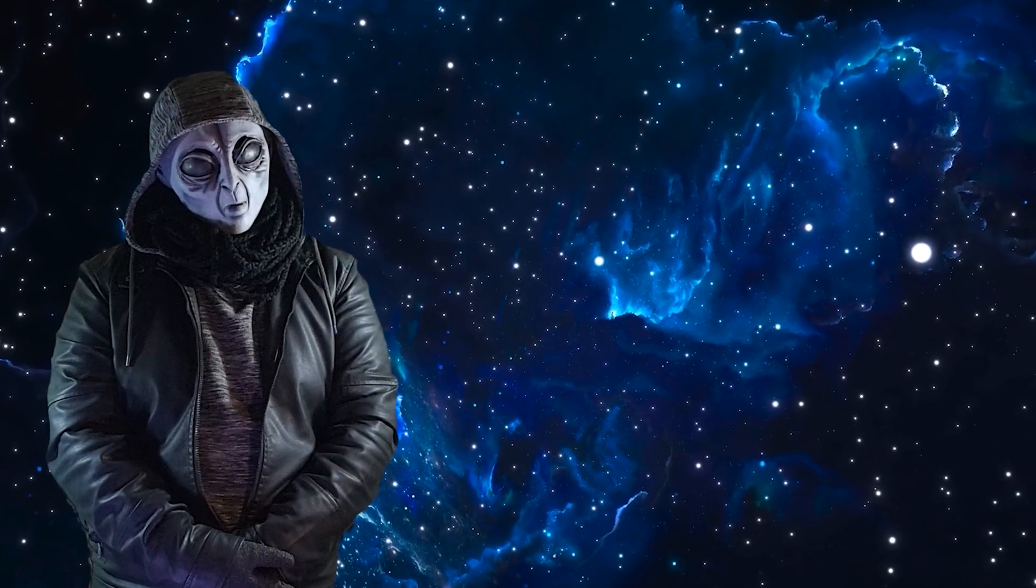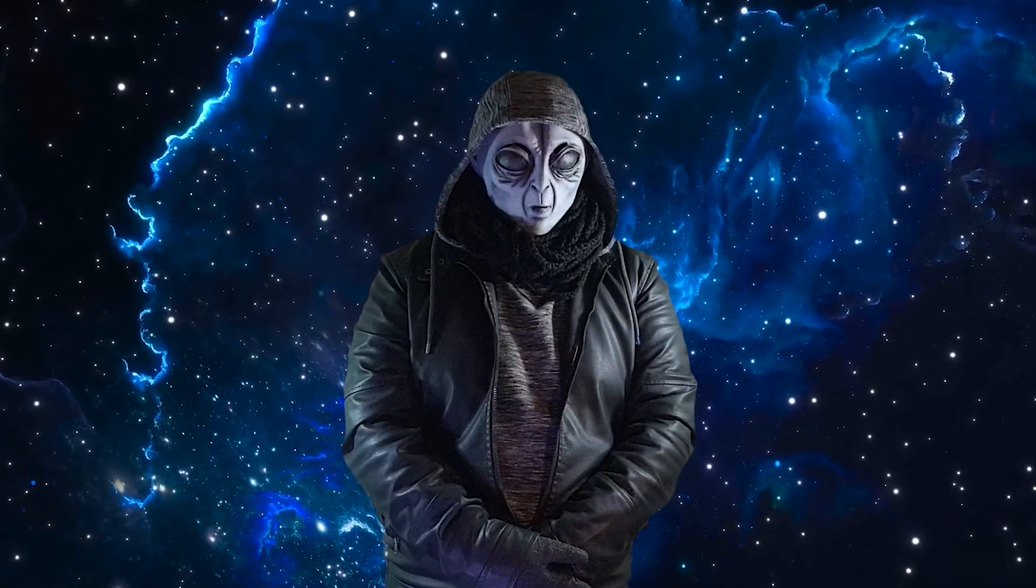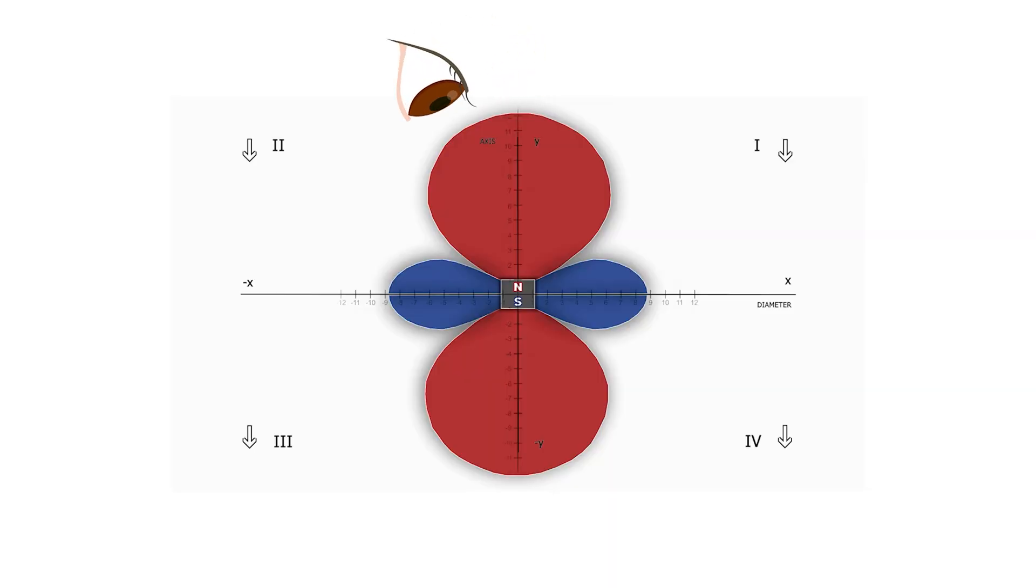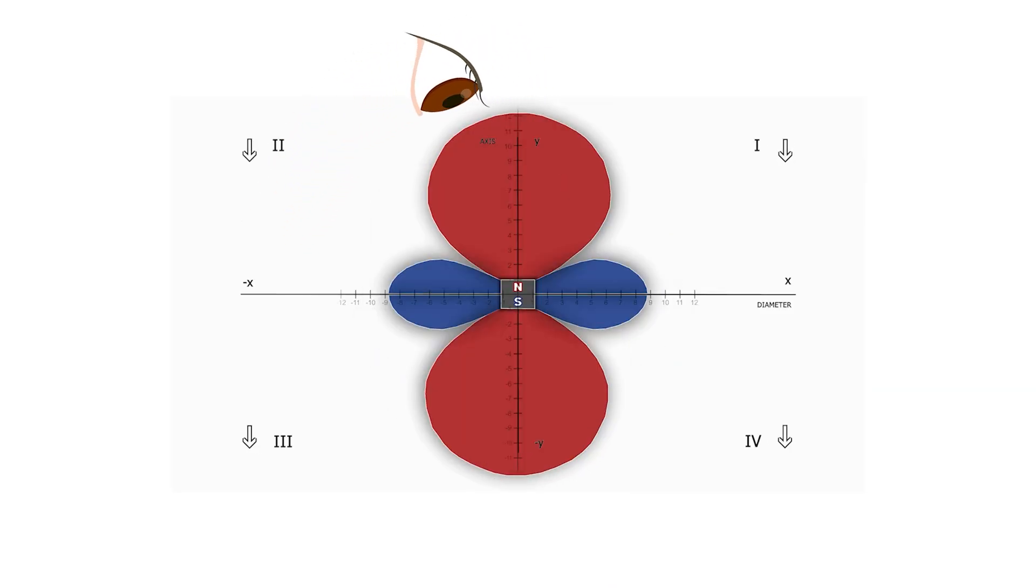It's as if the field knows where you're looking, and adapts accordingly. From now on, when you look at a magnet, remember, it's also watching you through its magnetic field, even if you can't see it.